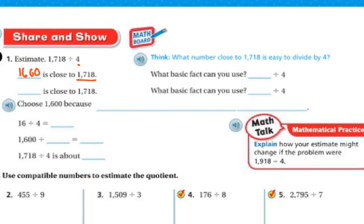So we can do 2000. The basic fact I used for the first one was 16 and the basic fact I used for the second one was 20.